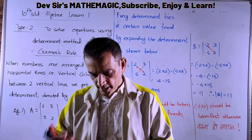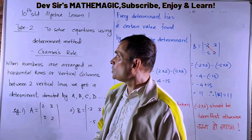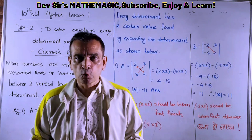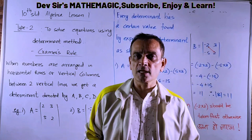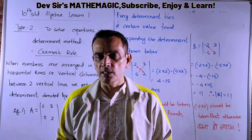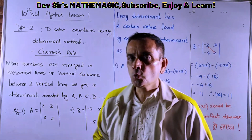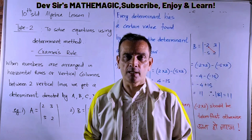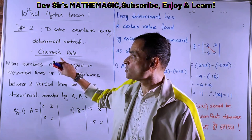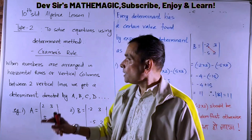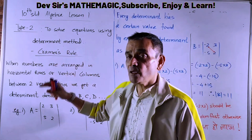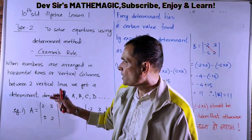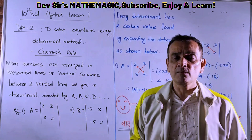We will start now. Let us begin with Type 2 of simultaneous equations — linear equations in two variables. In Type 2, to solve equations using the determinant method, this is called Kramer's Rule.